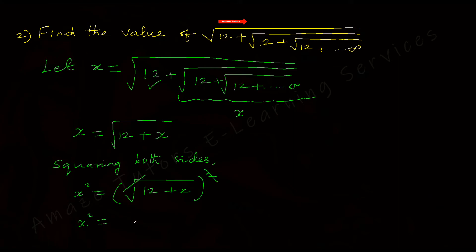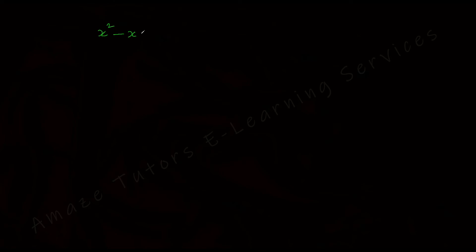We know that the square root and square cancel, giving simply 12 plus x. Bringing both 12 and x to the left side to make the right side zero: x squared minus x minus 12 equals 0. This is a quadratic equation which can be solved using the factoring method.